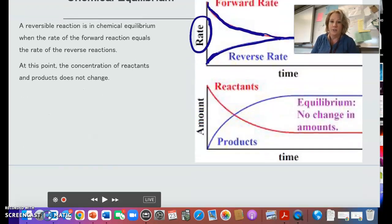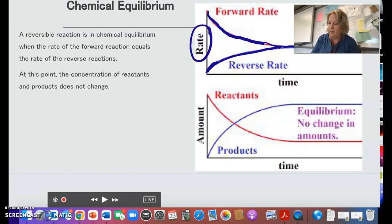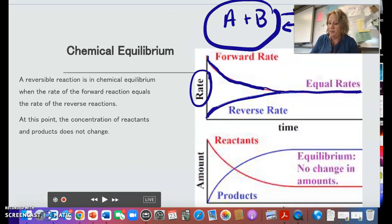You can also look at this in terms of concentration. In the beginning, assuming you start with just A and B, there is no product. But as time progresses and it turns into the product, then the products are going to also increase. At equilibrium, the concentration, the amount of the reactants and products is going to be constant.